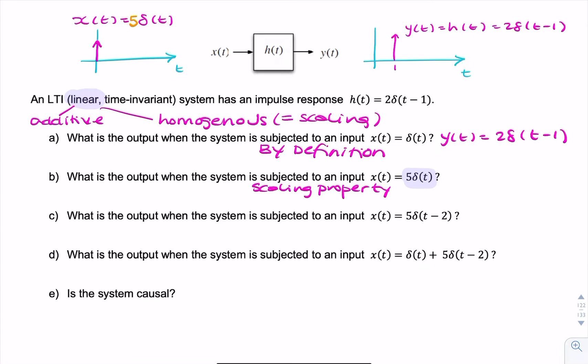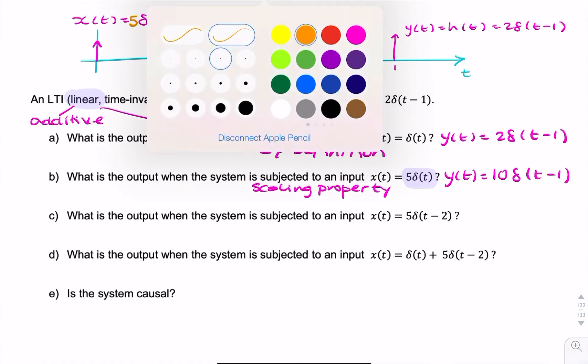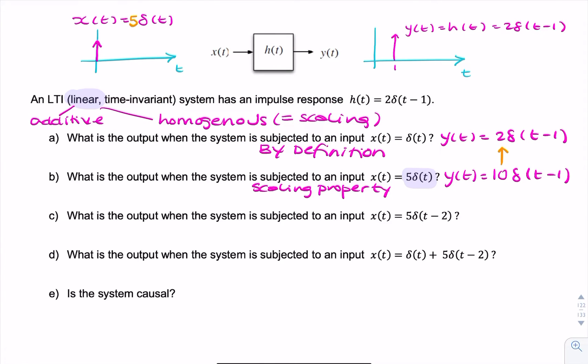So we can use the scaling property and say the output is simply going to be 5 times the impulse response. So it's 5 times 2, that's 10, times δ(t-1). So it's almost the same as that, except we're multiplying by 5.